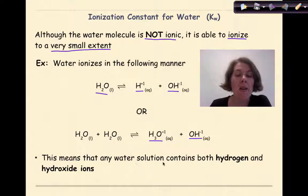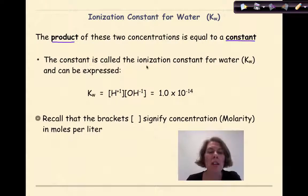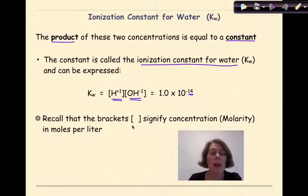This means that any water solution contains both hydrogen and hydroxide ions. The product — multiplying these two concentrations — is equal to a constant called the ionization constant for water, expressed as KW equals the concentration of hydrogen ions times the concentration of hydroxide ions, which equals 1 times 10 to the negative 14. Remember, the brackets signify concentration, which is molarity, in moles per liter.